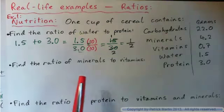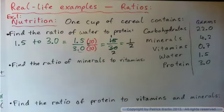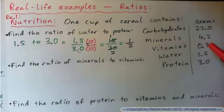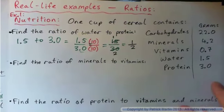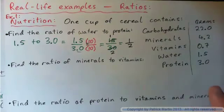Okay, so can you press pause and do this one? Find the ratio of minerals to vitamins, minerals 4.2, vitamins 0.7. Find that ratio the same way. So please press pause and try this one, then I'm going to do it pretty quickly.